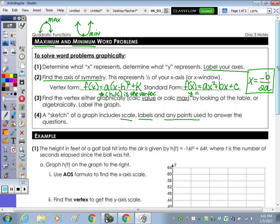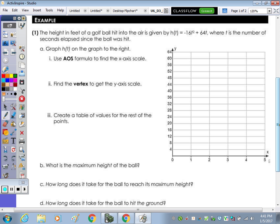So let's take a look at number one. The height in feet of a golf ball hit into the air is given by the function h(t) is equal to negative 16t squared plus 64t, where t is the number of seconds elapsed since the ball was hit. Part a, graph it. And if you think about a golf ball being hit, the golf ball has got to go up and then it's got to come down. So kind of picture what it's going to look like before you graph. Remember, on the calculator when you type this in, this would be equal to h(t) is your y, negative 16x squared plus 64x.